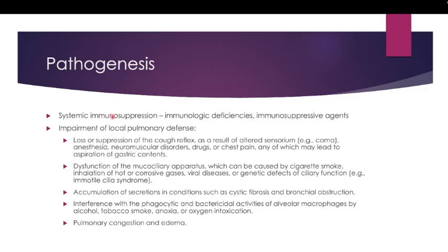For pathogenesis, pneumonia is an infection to the lung parenchyma, and any form of infection involves some impairment of the immune system. This impairment can be divided into systemic and local immune response. Systemic immunosuppression is usually caused by immunologic deficiency such as AIDS, which is caused by the HIV virus.